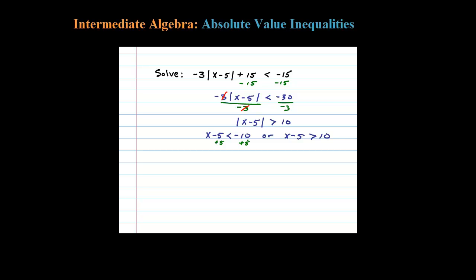Once you have it broken up into two linear inequalities, you solve each one like normal. Here, X is less than negative 5 — all numbers less than negative 5 solve the original inequality. Or, adding 5 to both sides of the second inequality, any number greater than 15 also solves the original inequality.